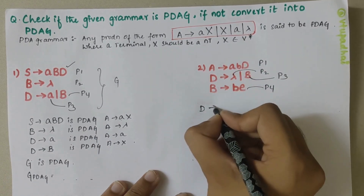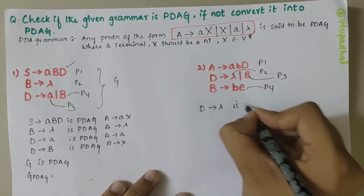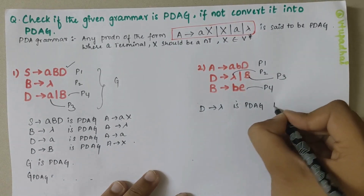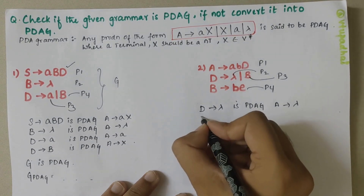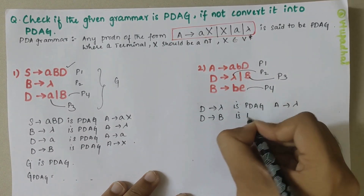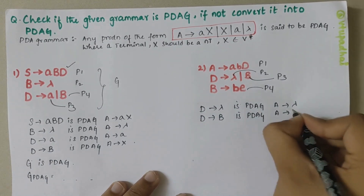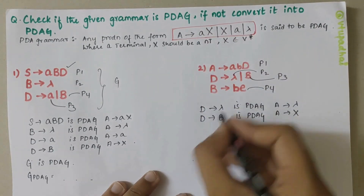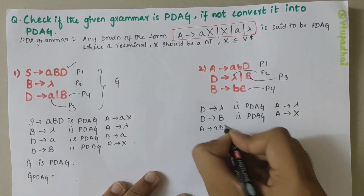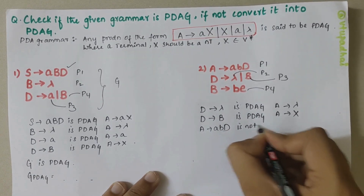Looking at the second production: D derives lambda is PDAG because it matches A derives lambda. Then D derives B is PDAG because it matches A derives X. Then A derives ABD is not PDAG.